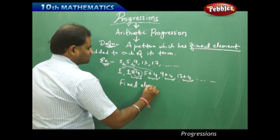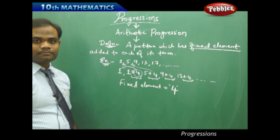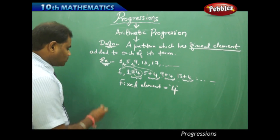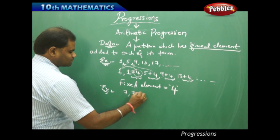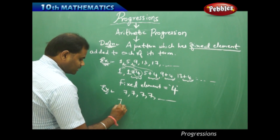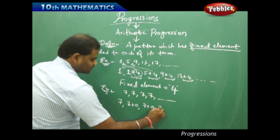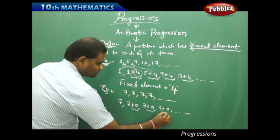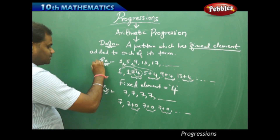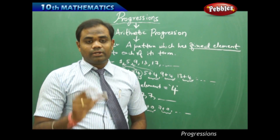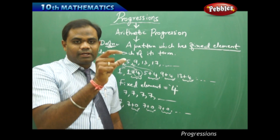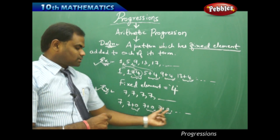The fixed element here is 4, which is what we identify in an arithmetic progression. Let me take one more example. Is this an arithmetic progression? Yes, it is, because every element is obtained by adding the fixed element 0 to the previous term. Here the fixed element is 0, which gives 7 plus 0 equals 7. So this is also an arithmetic progression. The only restriction is that a fixed element must be added to each of its terms — you need to identify a fixed element added in each term.